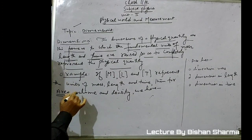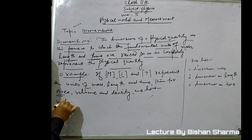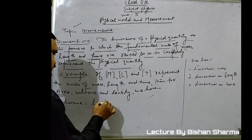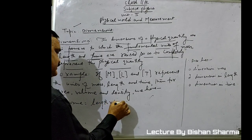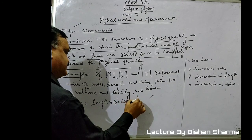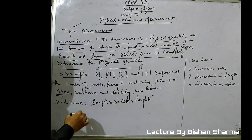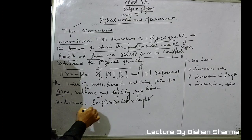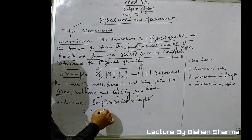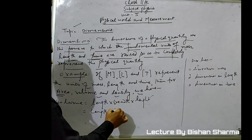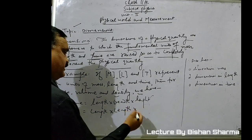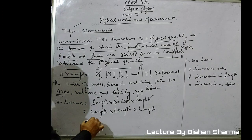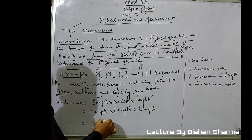Similarly, we will expand volume. Volume means length multiplied by breadth multiplied by height. All these quantities — length, breadth, and height — are taken as length. So volume equals length × length × length, which gives us L cubed.